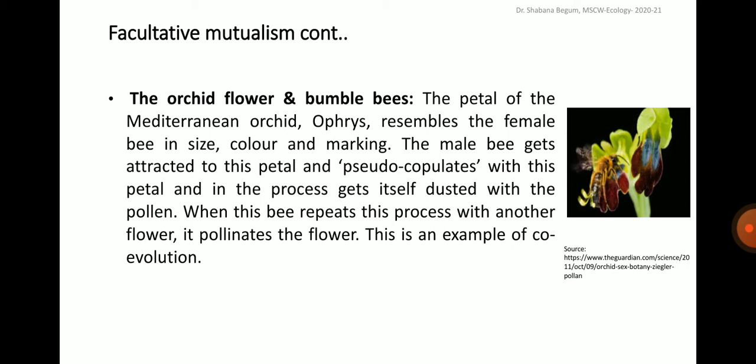An example of facultative mutualism is the association between the orchid flower and bumblebees. The petals of the Mediterranean orchid Ophrys resemble the female bee in size, colour and marking. The male bee gets attracted to this petal and pseudo-copulates with it, getting itself dusted with pollen. When this bee repeats this process with another flower, it pollinates the flower. This is an example of co-evolution.